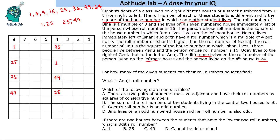We're also given that the leftmost person is the one whose roll number is the square of the house number in which Renu lives. So let's mark that. The leftmost roll number is the square of Renu's house. This means Renu lives in house 1 (square = 1), house 5 (square = 25), or house 7 (square = 49), giving us three possible cases.